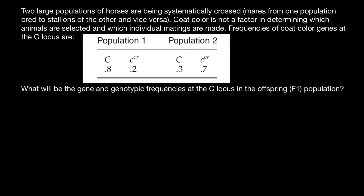Hello and welcome to Nikolai's genetics lessons. Today's problem: two large populations of horses are being systematically crossed — mares from one population breed to stallions of the other, and vice versa. Coat color is not a factor in determining which animals are selected and which matings are made. Frequencies of coat color genes at the C locus are as shown in the table. What will be the gene and genotypic frequencies at the C locus of the offspring in the F1 population?